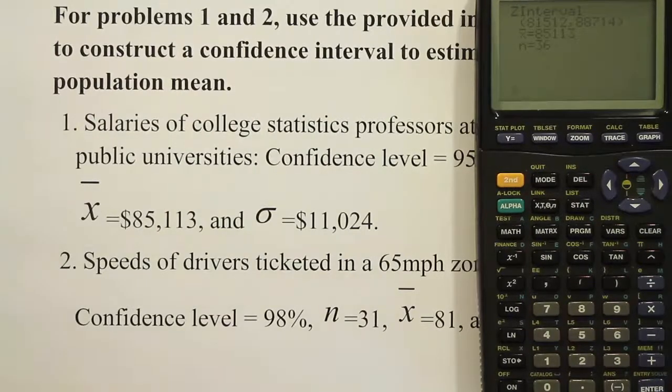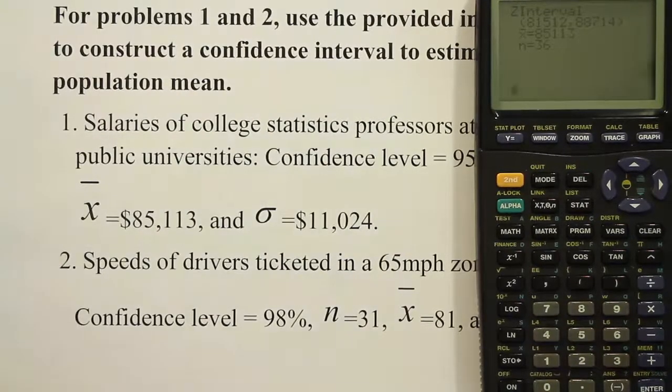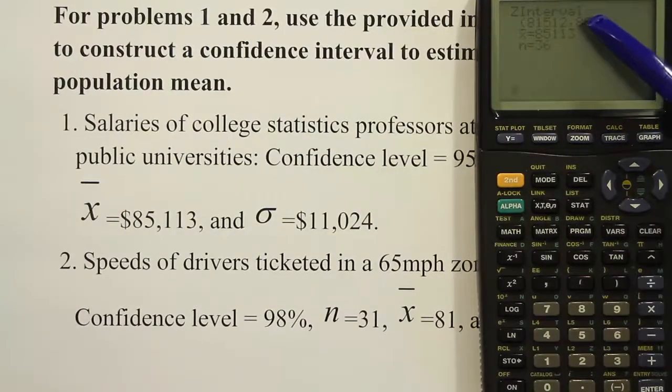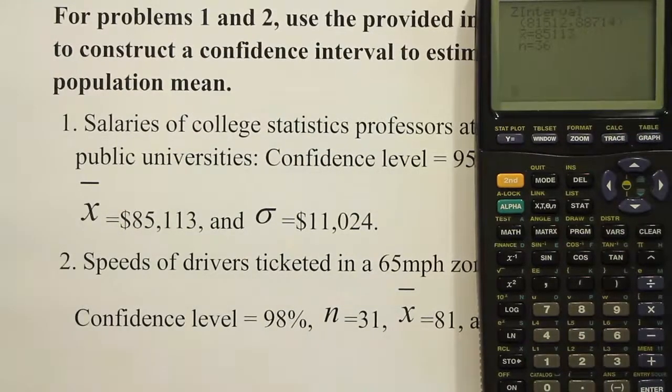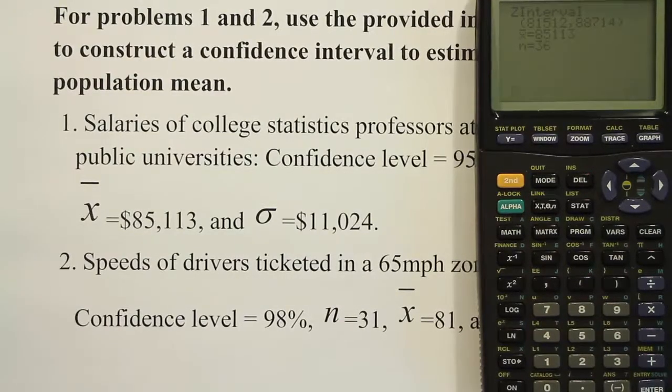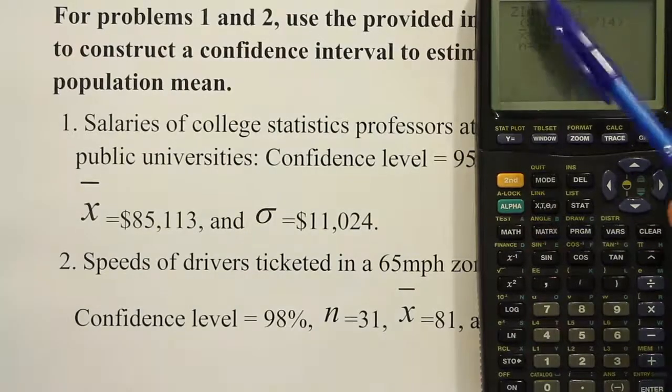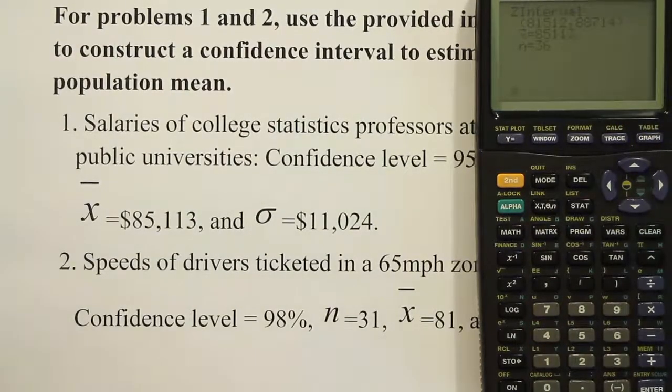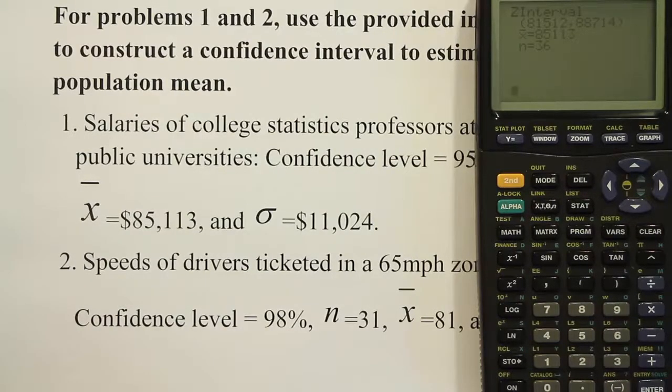It produces the interval right away for us, and basically we find the answer is 81,512 up to 88,714. And then it provides you with the sample mean and the n that you used in the problem. So we have our confidence interval right there, those are our two numbers, our lower bound and our upper bound. 81,512 to 88,714.